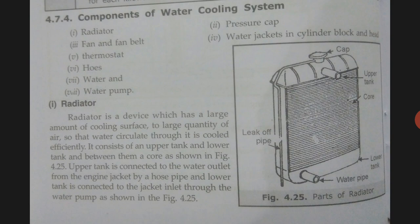As shown in figure 4.25, you can see the picture of a radiator. The radiator consists of three parts: first is the upper tank, on which a pressurized cap is mounted; then you have the lower tank; and these two tanks are connected by fine tubes through which air can pass easily and carry away the heat of the heated water contained in these tubes.